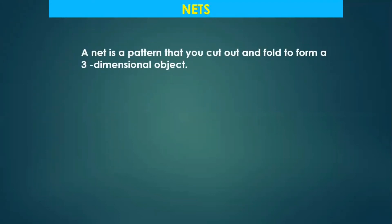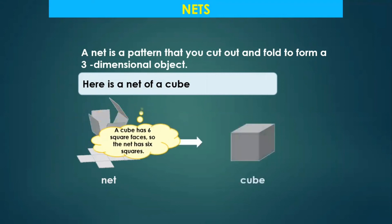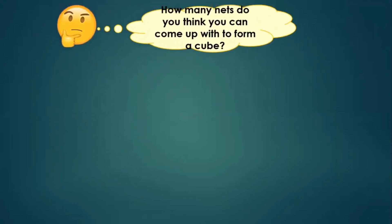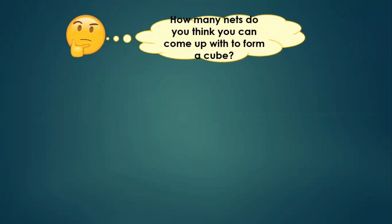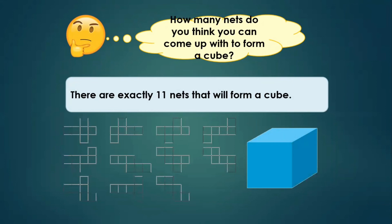Now let us understand nets. A net is a pattern that you cut out and fold to form a 3D shape. When you cut open a 3D shape, what you get is a net. Here is a net of a cube — cardboard boxes, when you cut open, give us a net. A cube has six square faces, so the net has six squares. And remember, there are exactly 11 nets that can form a cube.